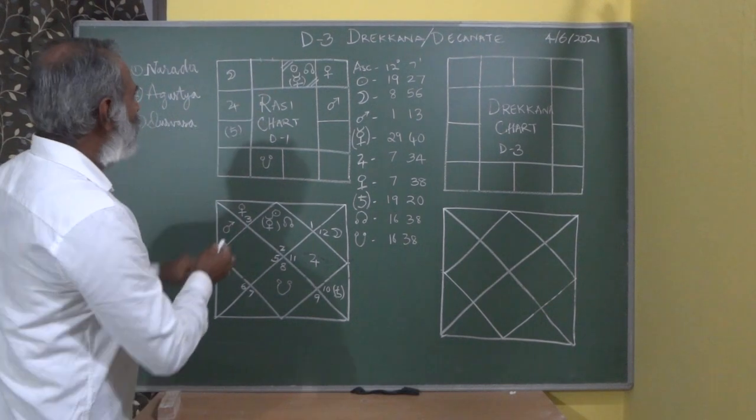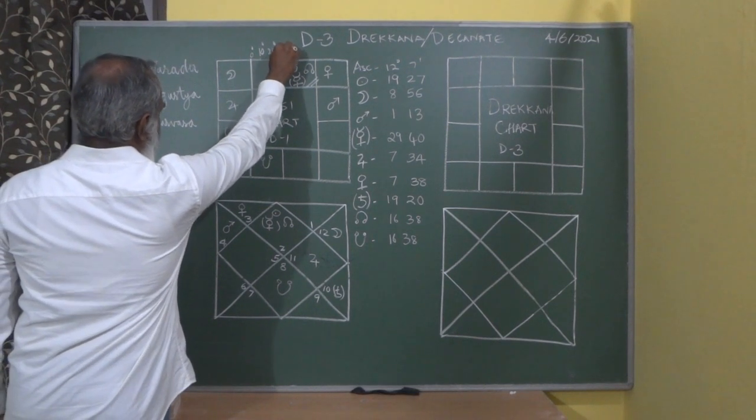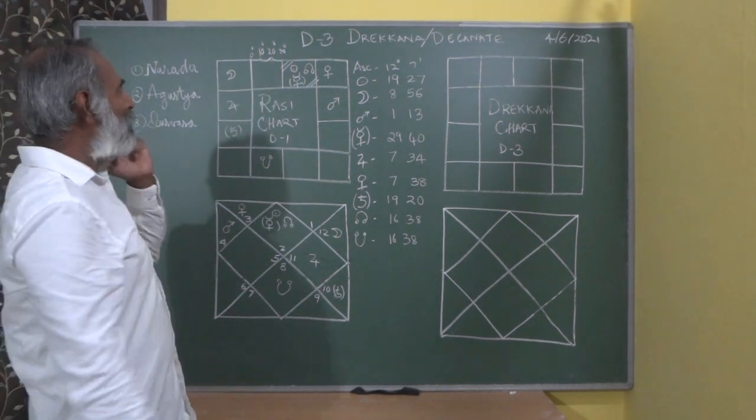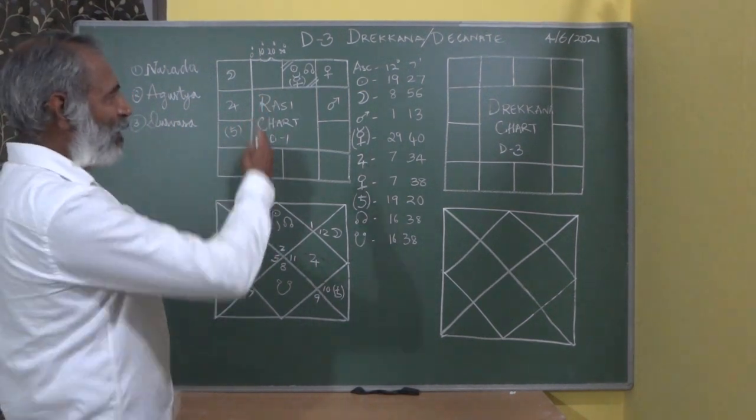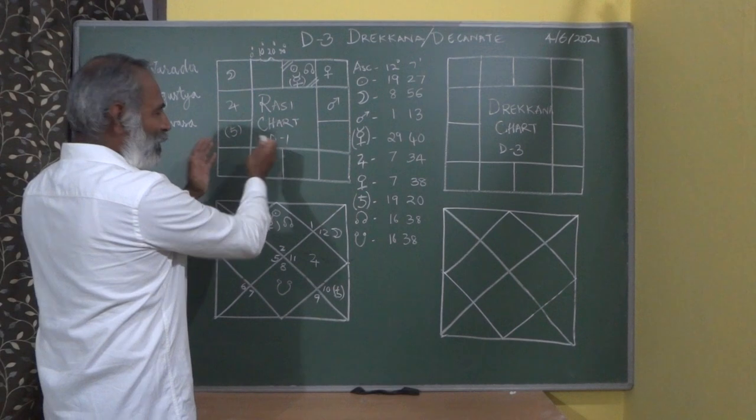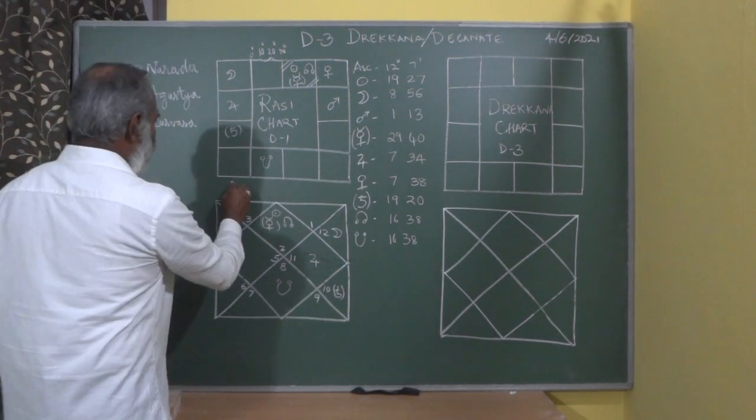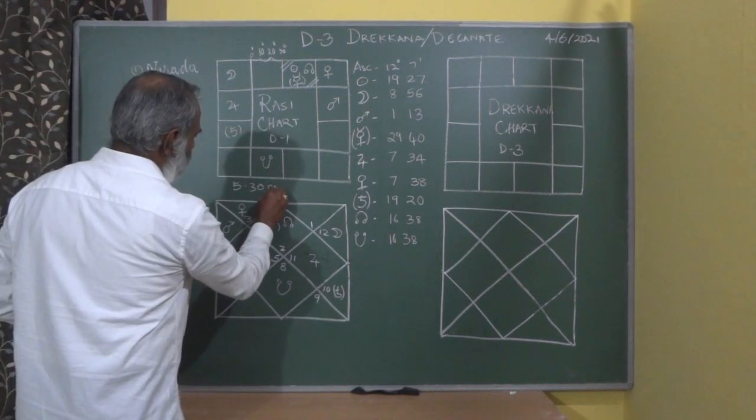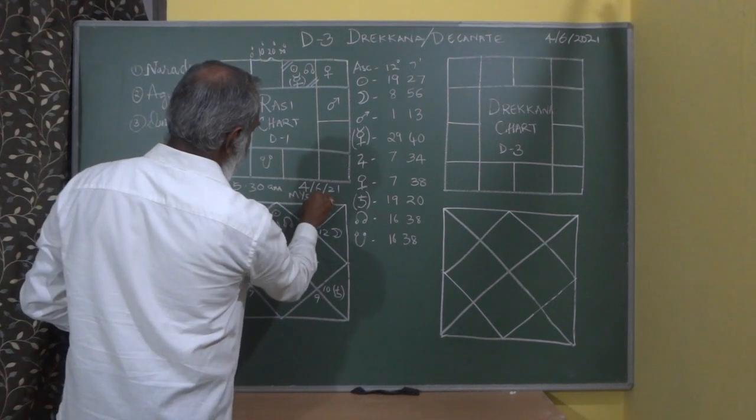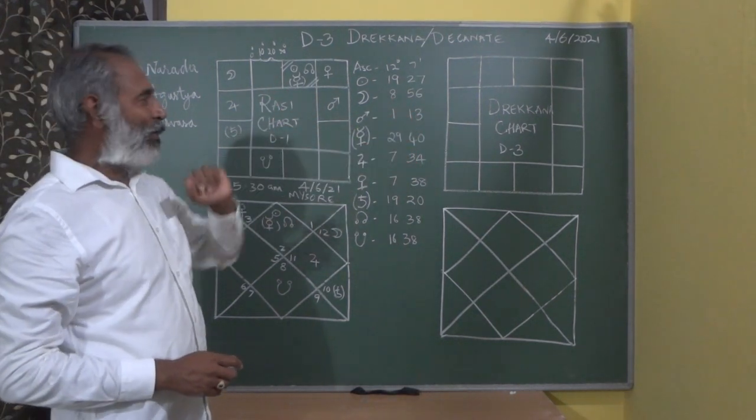The three pieces would be from 0 degrees to 10 degrees, then 10 to 20 degrees, and 20 to 30 degrees. Each part is one Drakana. How do we actually plot the Drakana chart using the D1 chart? This example is from today's morning at 5:30 a.m. on June 4th, 2021 at Mysore. Let us make a Drakana chart and plot it.